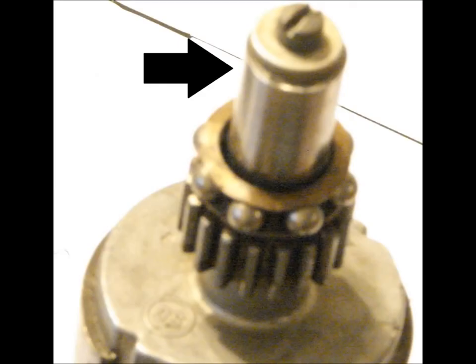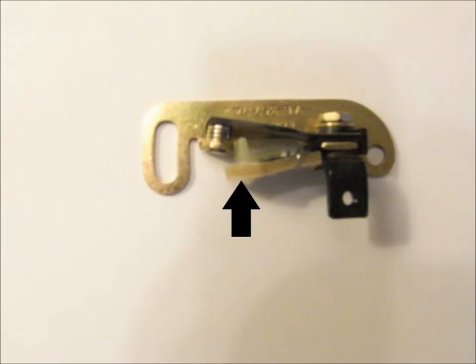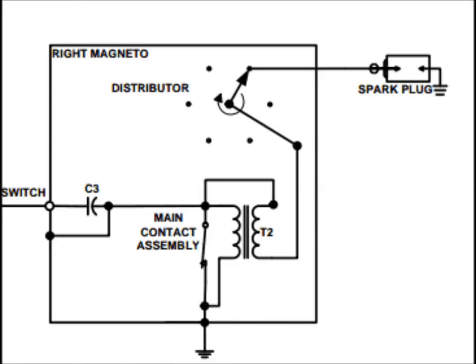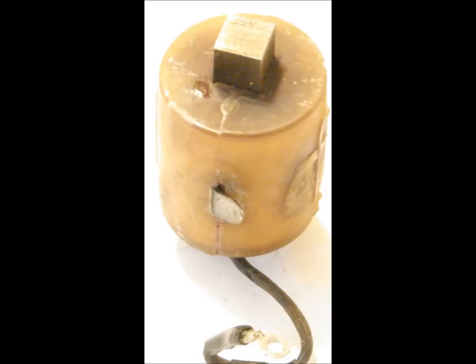The points are actuated by the cam, which is located at the end of the rotor. As the cam turns, the high spot pushes up against the cam follower, which in turn opens the points and disconnects the primary circuit's path to ground.